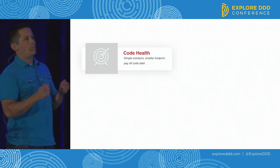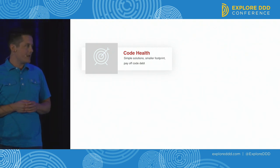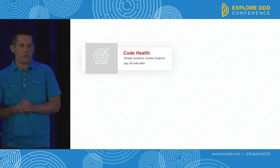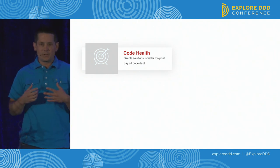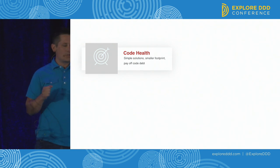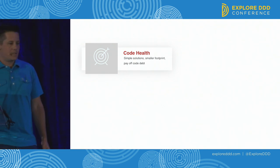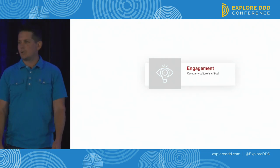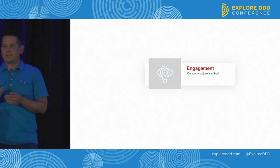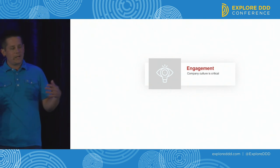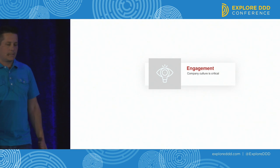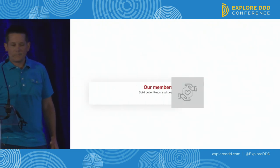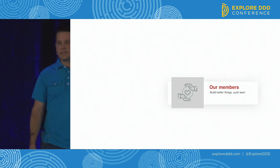Why am I here today, and why is modeling your domain with your product team important? Code health, as a software developer, is very important to me and my team. We want to have simple solutions, a smaller footprint, and not have a lot of code debt. Engagement is also important. Company culture at InboxDollars is a huge priority, so you want to keep developers happy and have a good connection with your product team. We want to retain our employees and not lose people because they're frustrated. Without our members, the website would not exist. Using domain-driven design principles and concepts will help bring better value to our members.